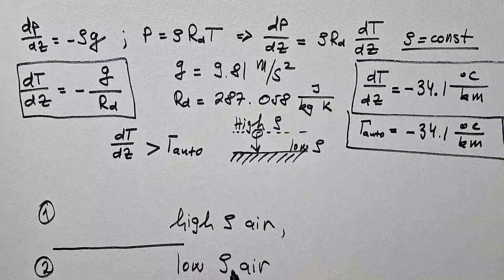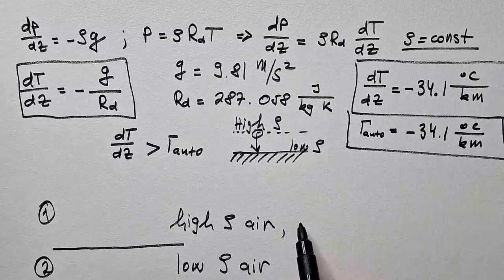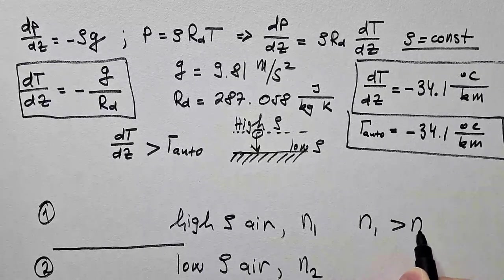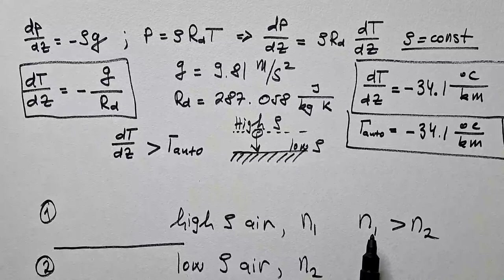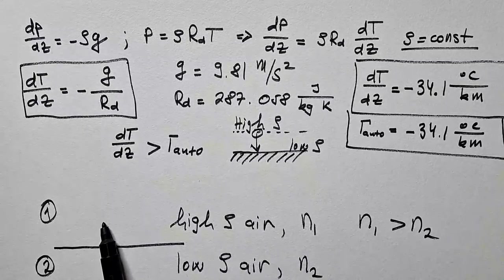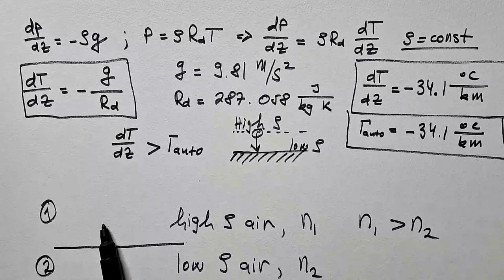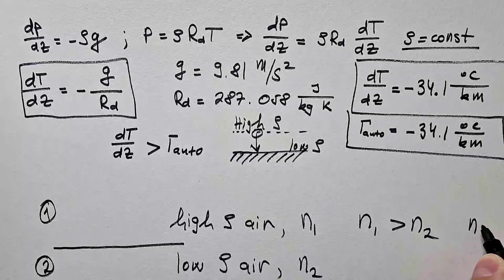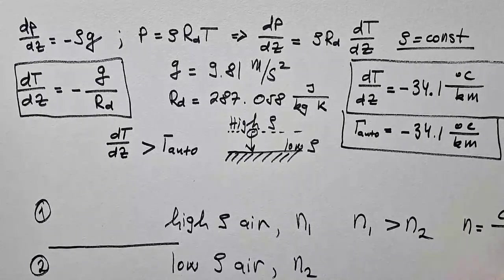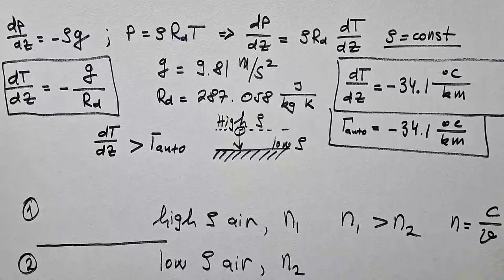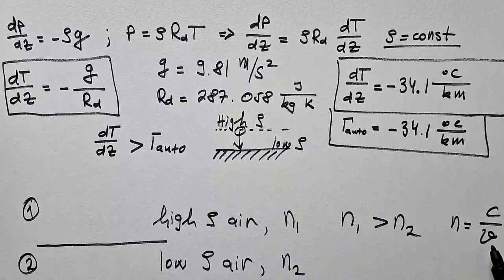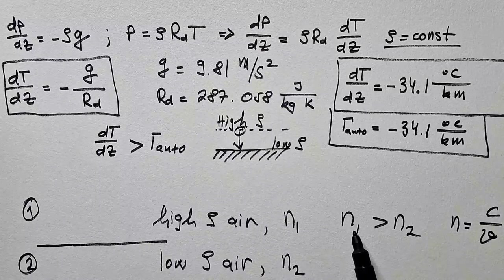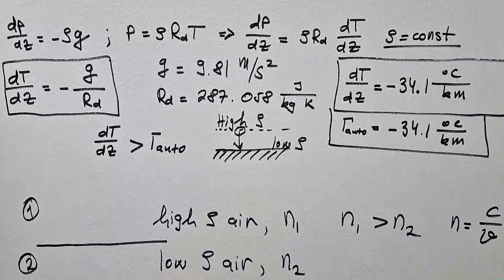Now these two regions have different indices of refraction, N1 and N2. N1 is actually larger than N2. What this means, without equations, is that in this region over here, light travels slower than in this region. N is defined as C over V where C is speed of light in vacuum and V is speed of light in some medium. So the higher N, the slower the light travels in that medium.